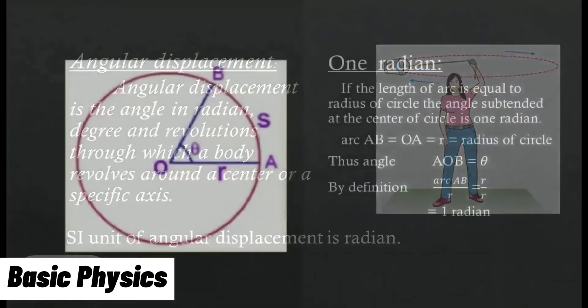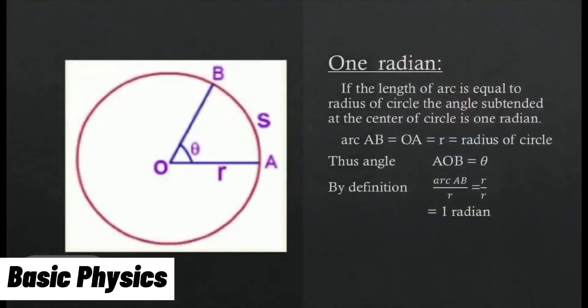One radian: If the length of arc is equal to radius of circle, the angle subtended at the center of circle is 1 radian. Arc AB equals OA equals radius of circle. Angle AOB is θ. By definition, arc AB by r equals 1 radian.